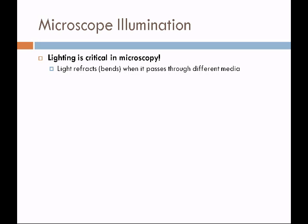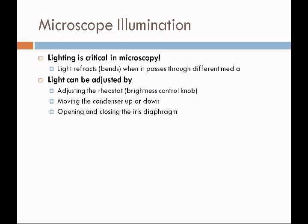Lighting is very important in microscopy. Every time light goes from one material to another — from glass to air or glass to water — it is going to bend. That bending is called refraction. There are a number of ways that light can be adjusted in the microscope: you can adjust the brightness control knob, the rheostat; you can move the condenser up or down; and opening and closing the iris diaphragm can also adjust the light.